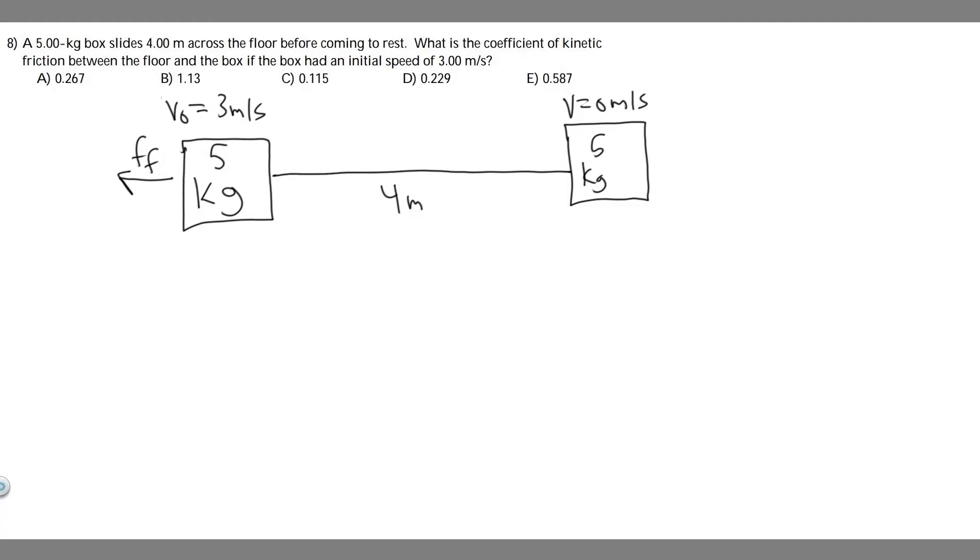In this problem, we're told a 5 kg box slides 4 meters across the floor before coming to rest. What is the coefficient of kinetic friction between the floor and the box if the box had an initial speed of 3 meters per second?